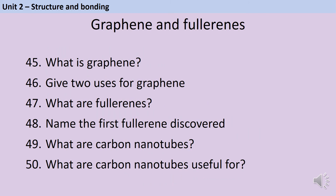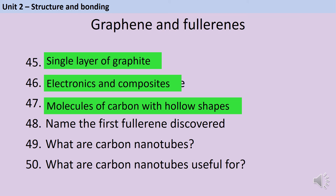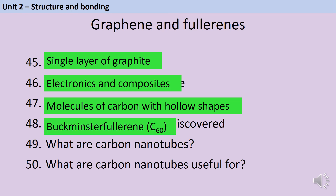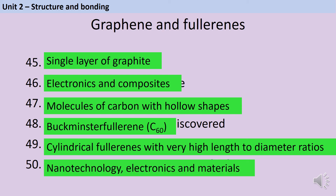Graphene is a single layer of graphite and can be used in electronics and composites. Fullerenes are hollow molecules made out of carbon; the first one to be discovered was C₆₀, called Buckminsterfullerene. Carbon nanotubes are cylindrical fullerenes with very high length-to-diameter ratios — they can be a few atoms across but incredibly long in length. They are useful for nanotechnology, electronics, and strengthening materials.